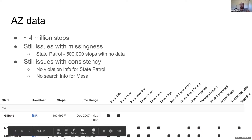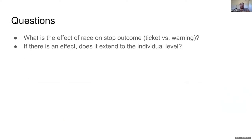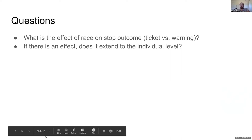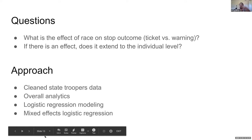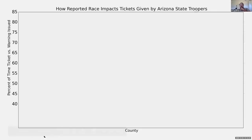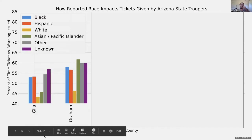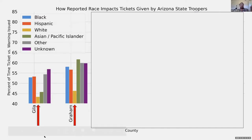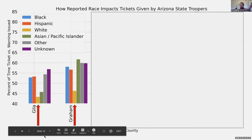The state patrol is missing half a million stop records, and you don't have violation information for state patrol, though you have search info. For Mesa you don't know why they searched, or if anything came out of the search — making comparisons hard. But you can still do some interesting things. My two questions are: what is the effect of race on stop outcome — ticket versus warning — and if there is an effect, does it extend to the individual level?